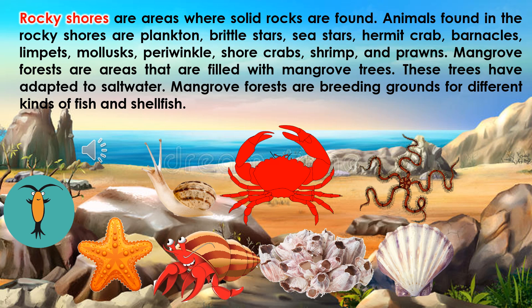Rocky shores are areas where solid rocks are found. Animals found in the rocky shores are plankton, brittle stars, sea stars, hermit crab, barnacles, limpets, mollusk, periwinkle, shore crabs, shrimp, and prawns.